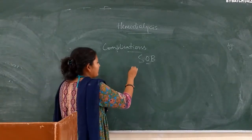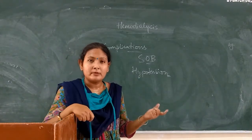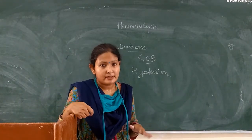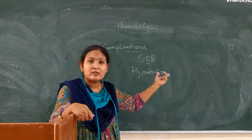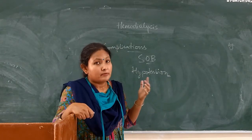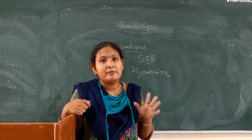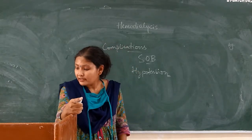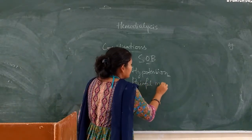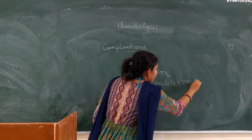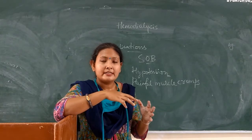The next complication is hypotension. The patient will be very nauseated, and along with hypotension, nausea and vomiting will occur. Diaphoresis — excessive sweating — will be experienced, as well as tachycardia. Another important complication at the time of dialysis is painful muscle cramps, because sodium and electrolytes are removed very rapidly from the body.